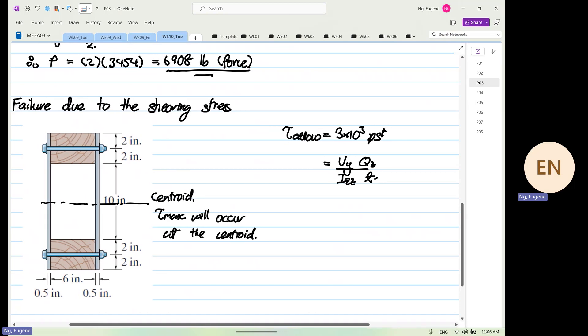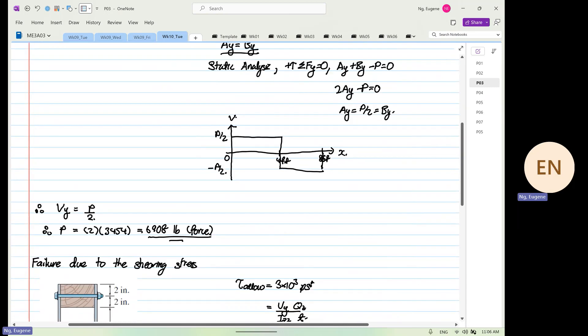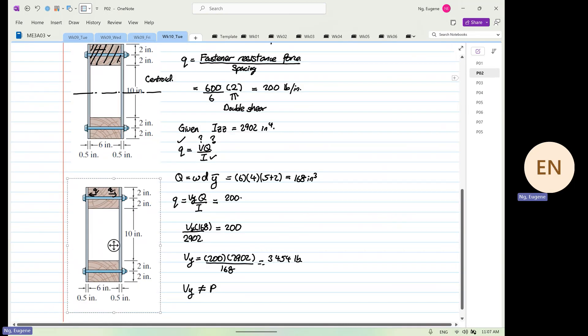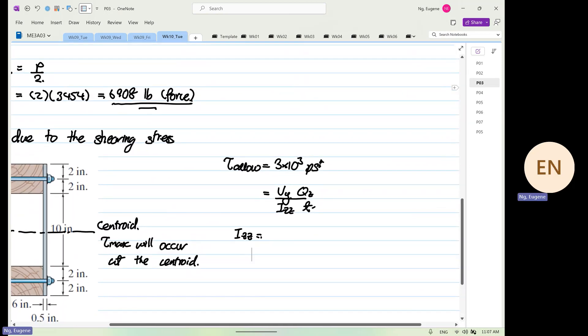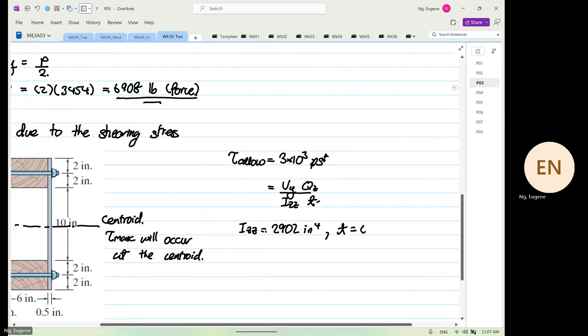So now we are going to look at the shear stress allowable. The only thing that we don't know for now is we know Izz. Izz we are given earlier is equal to 2902. T we also know T is equal to what? What we see over here is 0.5 plus 0.5, so it's 1 inch.